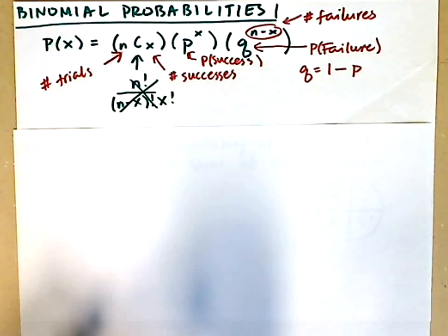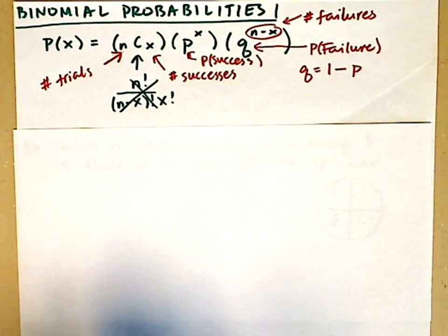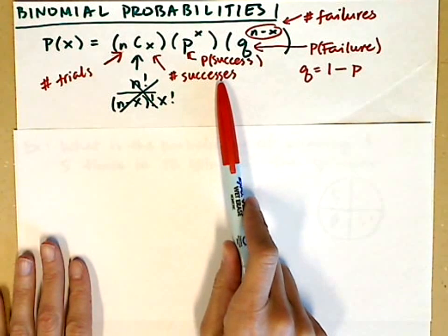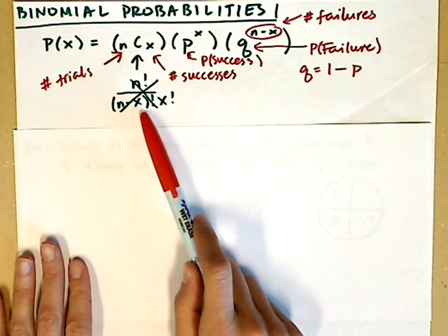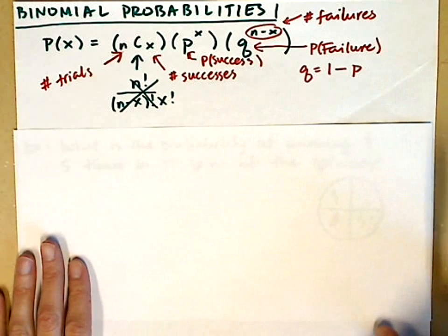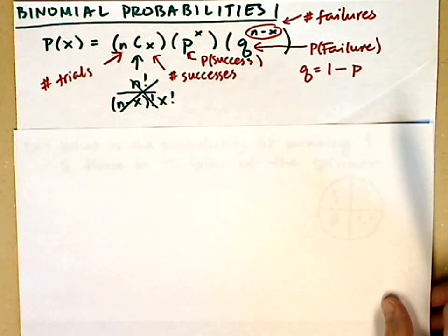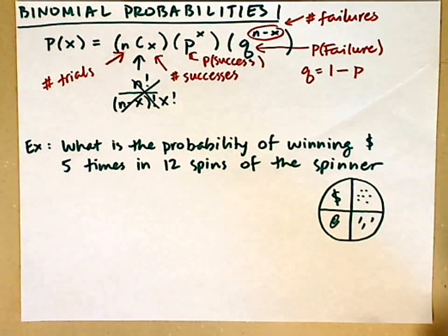Let's take a look at an example. I'm going to show you a few ways of computing the probability. We're going to use the formula, which is equivalent to the one in the text with factorial notation, and then I'll also show you how to use the distribution menu in your calculator.